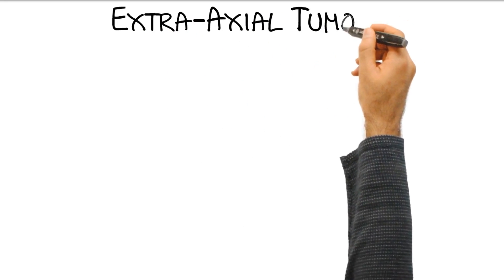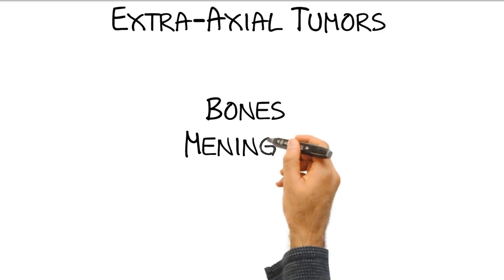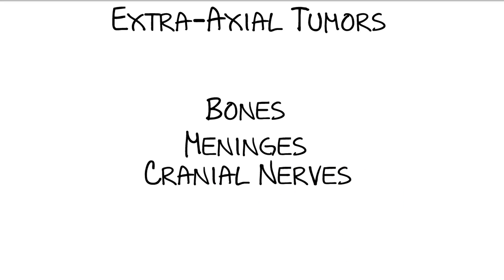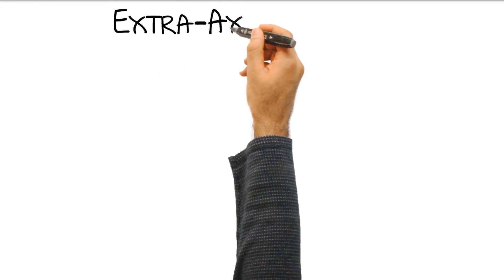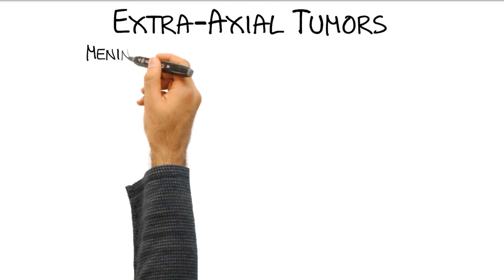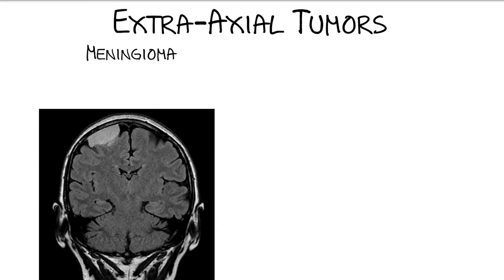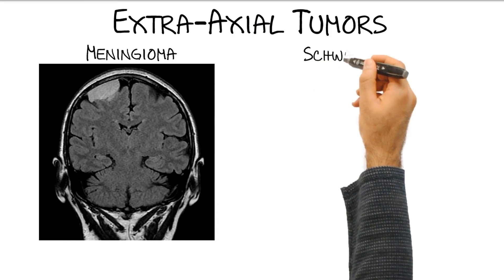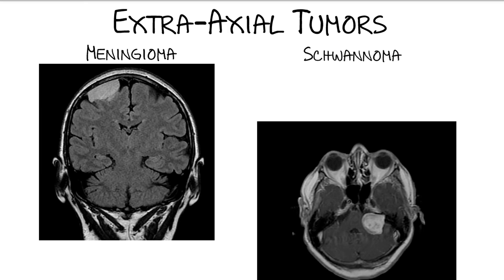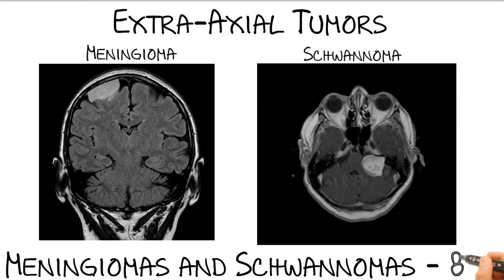Extraaxial tumors originate from the bones of the skull base and calvaria, meninges, and cranial nerves. In adults, 80% of all extraaxial tumors are either meningiomas or schwannomas. Extraaxial tumors are the most common adult intracranial neoplasms and typically present as slowly growing dural-based masses.